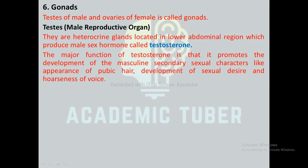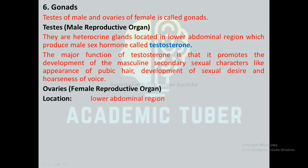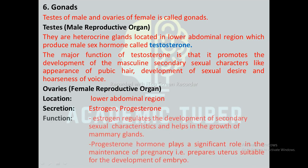Gonads: the testes are the male reproductive organs. They are heterochrine glands located in the lower abdominal region and produce the male sex hormone testosterone. Testosterone promotes the development of masculine secondary sexual characters like pubic hair, sexual desire, and hoarseness of voice. Ovaries are the female reproductive organs located in the lower abdominal region. They secrete hormones called estrogen and progesterone. Estrogen regulates the development of secondary sexual characteristics and helps in the growth of mammary glands. Progesterone plays a significant role in the maintenance of pregnancy by preparing the uterus for the development of the embryo.